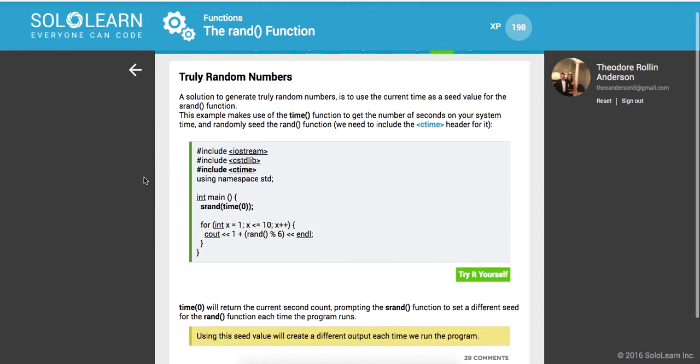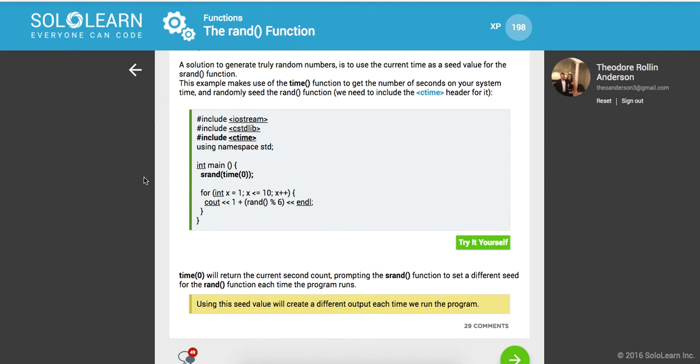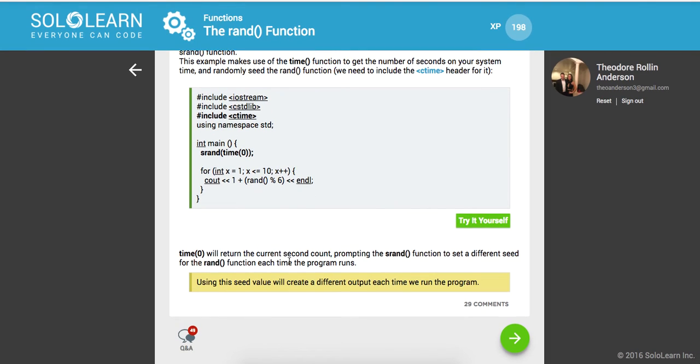So truly random numbers. A solution to generate truly random numbers is to use the current time as a seed value for the sRAND function. This example makes use of the time function to get the number of seconds on your system time and randomly seed the RAND function. We need to include the cTime header for it. And so time 0 will return the current second count, prompting the sRAND function to set a different seed for the RAND function each time the program runs.